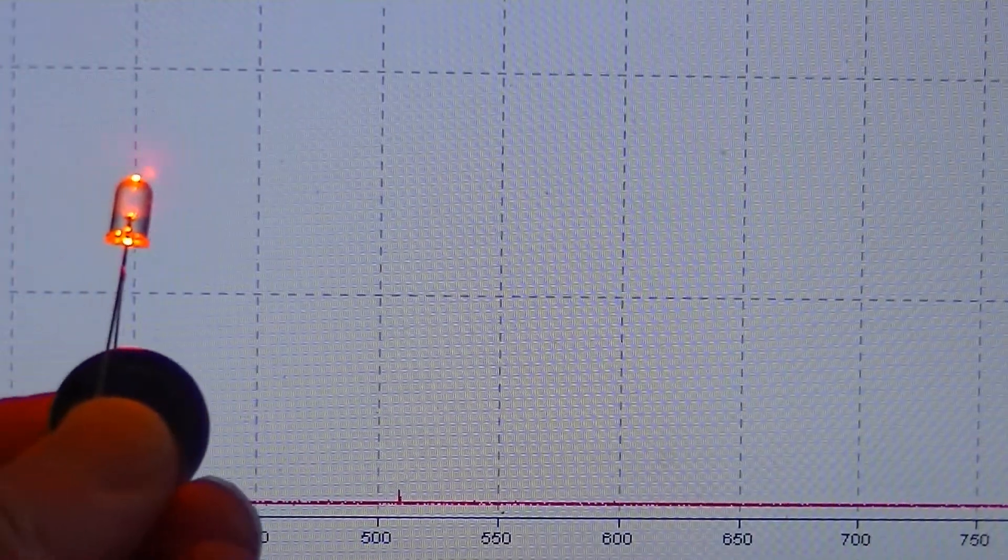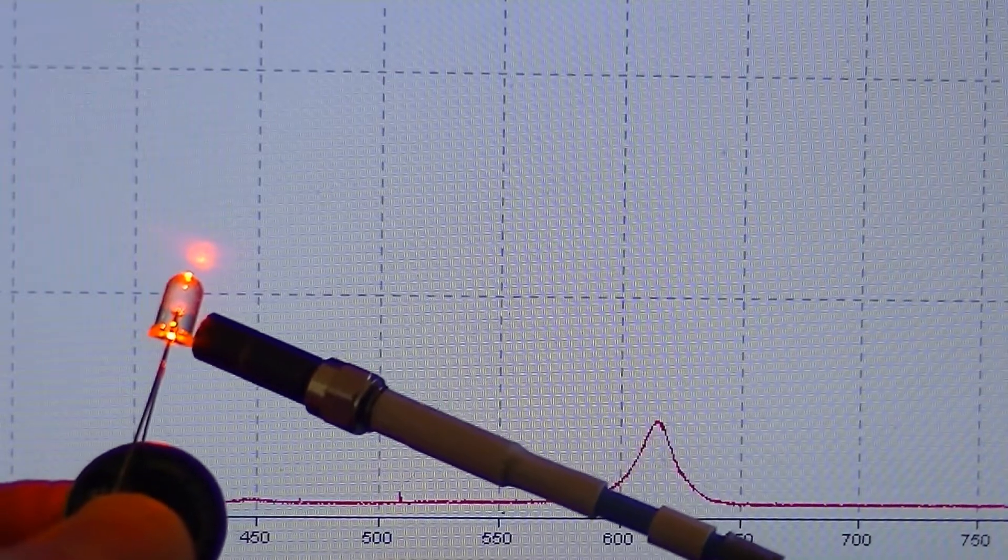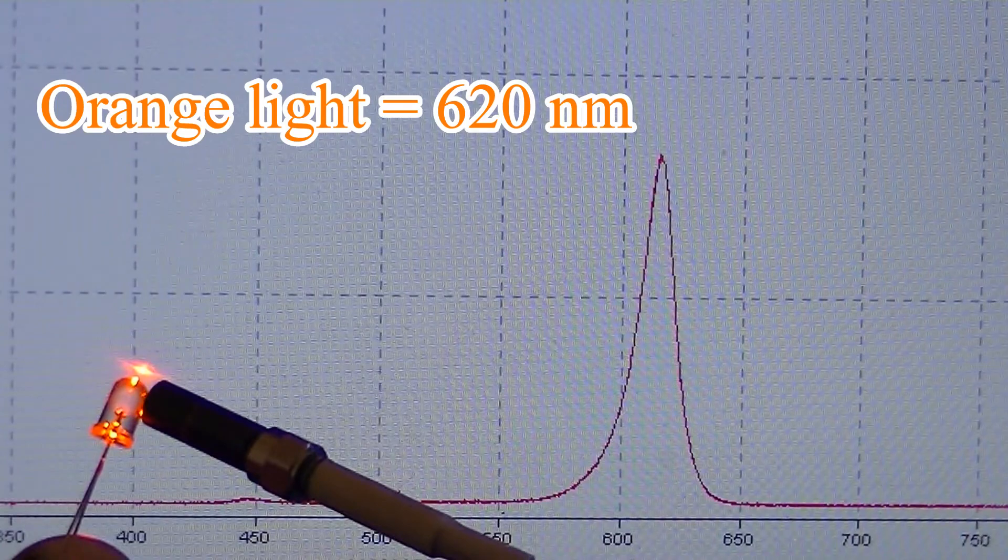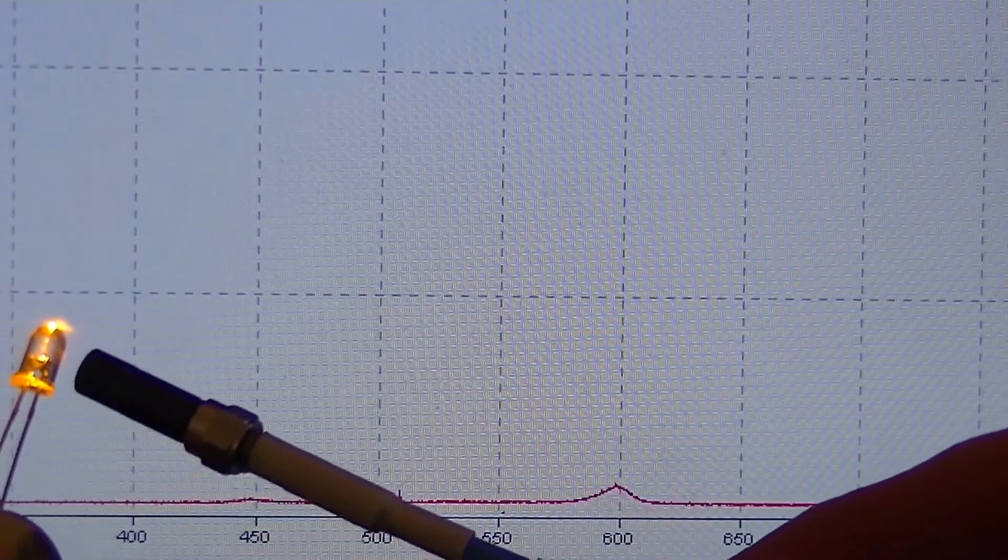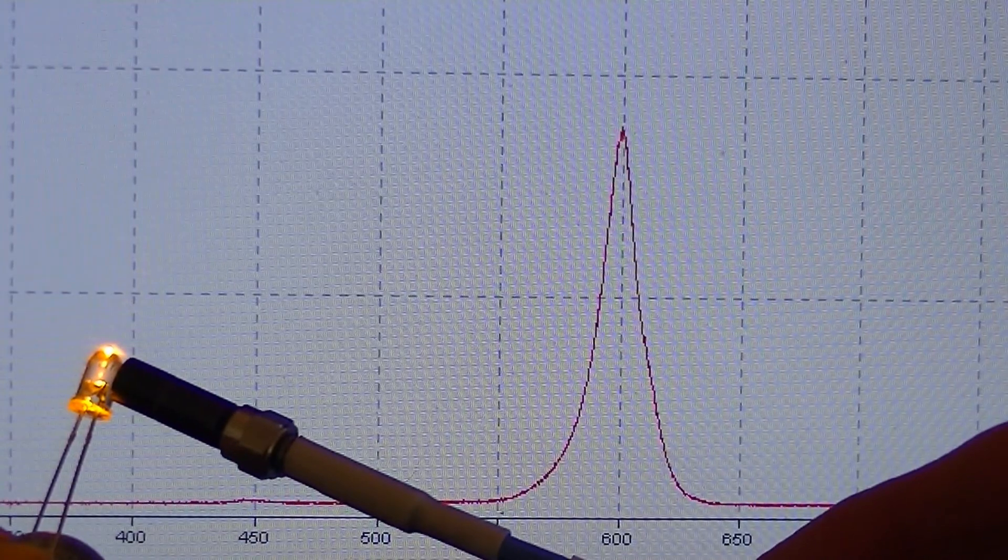Let's use a spectrometer to find the wavelength of some LEDs of other colors. It looks like this orange LED has a wavelength of about 620 nanometers. Light from this yellow LED has a wavelength just under 600 nanometers.